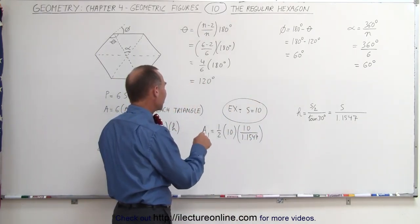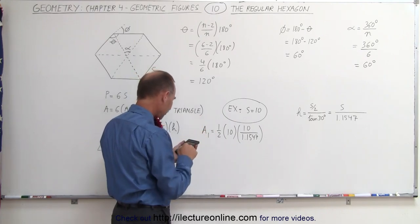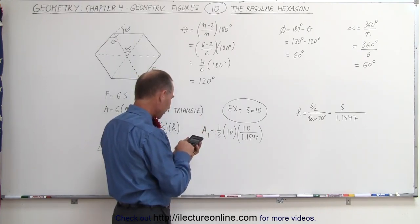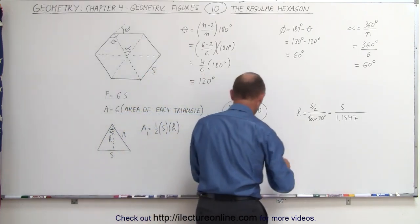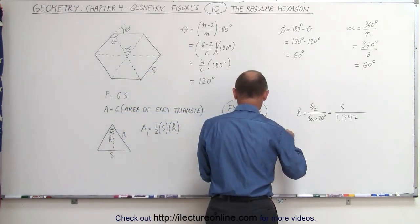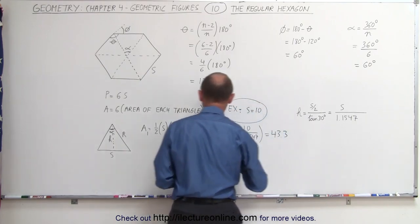So we get half times 10 is 5, times 10 is 50, so we get 50 divided by 1.1547. That would be equal to 43.3. And then, of course, to find the total area...